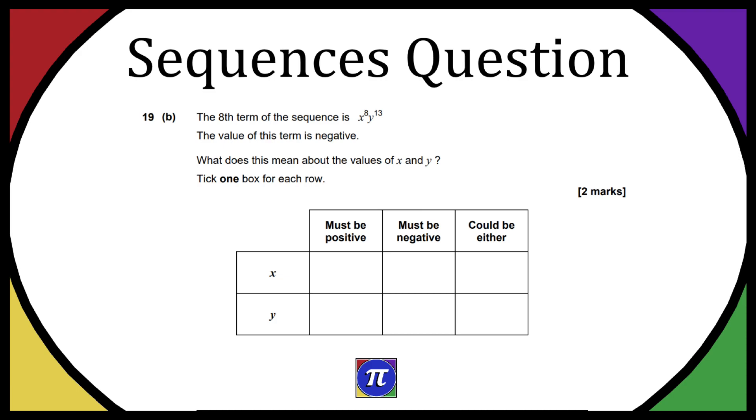Now question 19b is the second part of the sequences question and it states that the eighth term of the sequence is x to the power of 8 and y to the power of 13. The value of this term is negative. What does this mean about the values of x and y? Tick one box for each row.